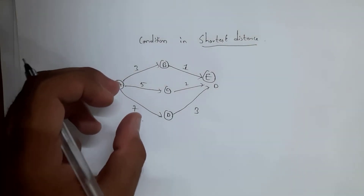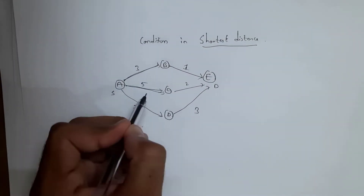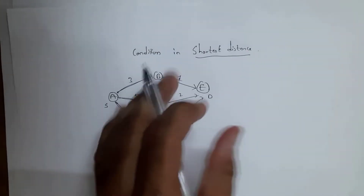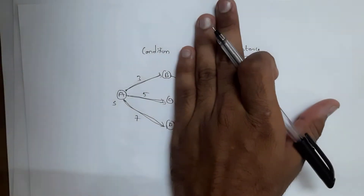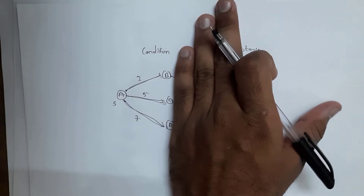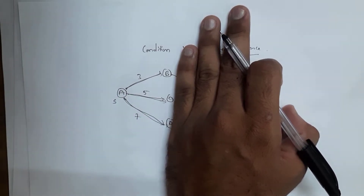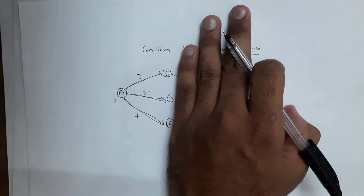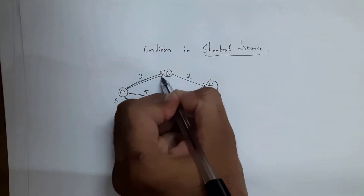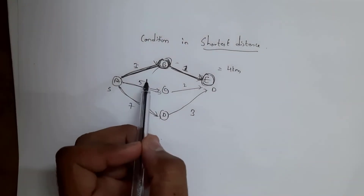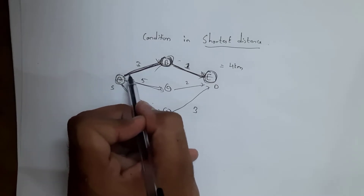In greedy method, a decision is taken based on the current available information — that is from A to B, from A to C, and from A to D. The distances to B, C, and E nodes are future information. Among the current available information, we pick the best result. The shortest distance is 3 kilometers — from A to B — so I choose that route.